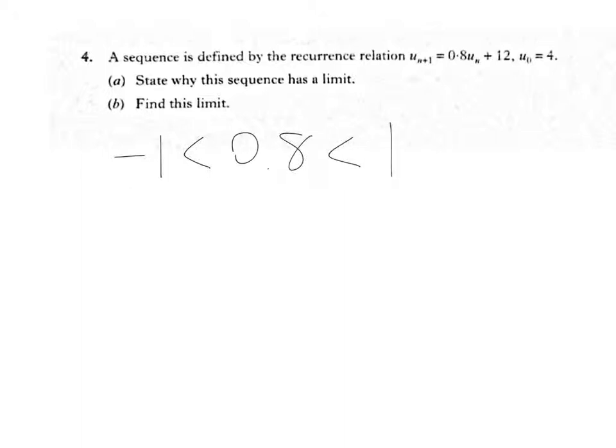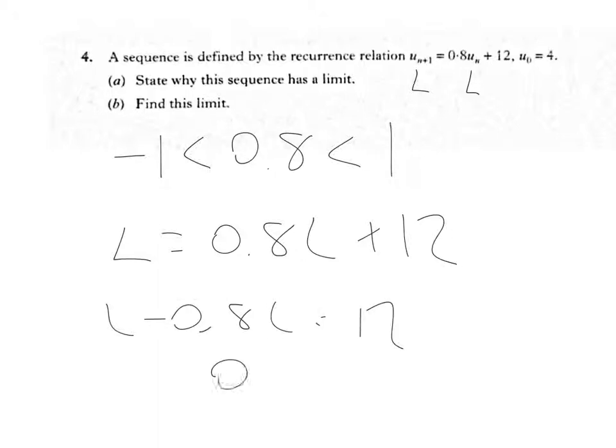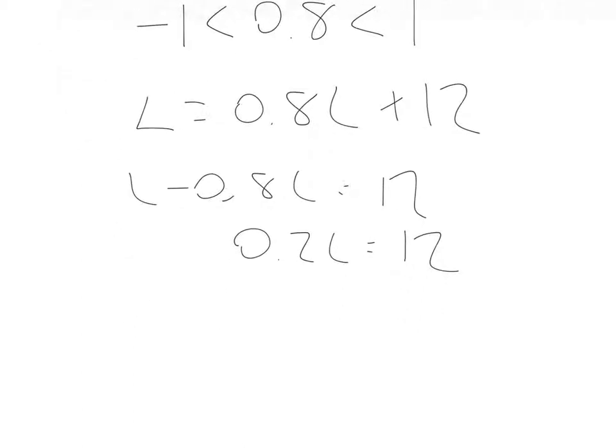Part B, find the limit. So, when the limit occurs, the next term is the limit. So, the limit equals 0.8 lots of the limit plus 12. That's L minus 0.8L equals 12. That's 0.2L equals 12. L is equal to 12 divided by 0.2. Non-calculator question. I can multiply top and bottom by 5, and that will give me 60 over 1, which is 60, and that's the limit.